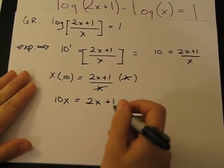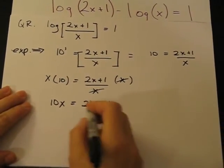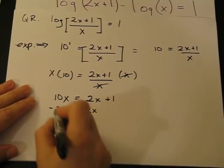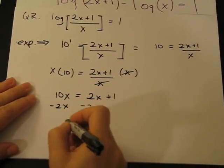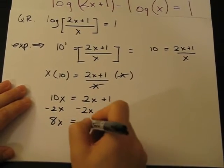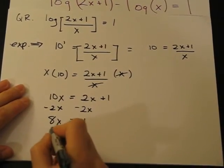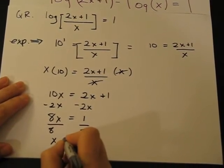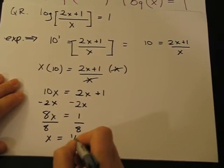And then basically we're just solving for x at this point. Next what we'll do is subtract 2x from both sides. This becomes 8x = 1, and then we divide it by 8, and we get x = 1/8.